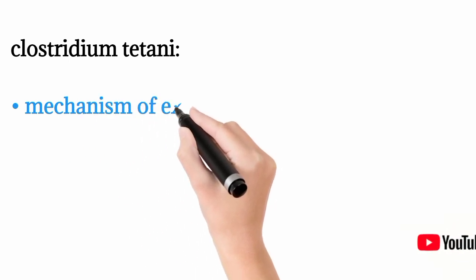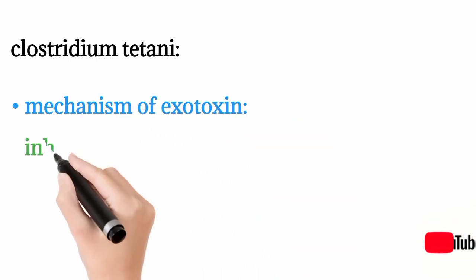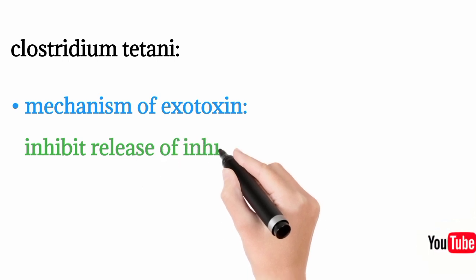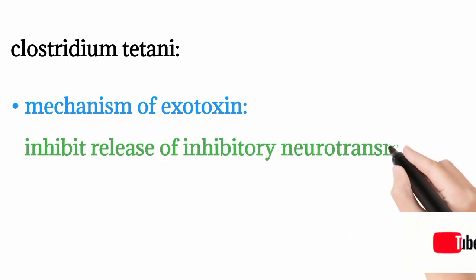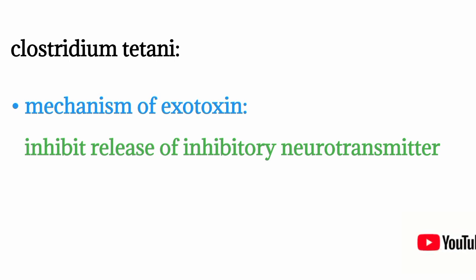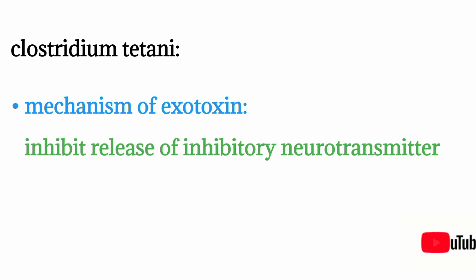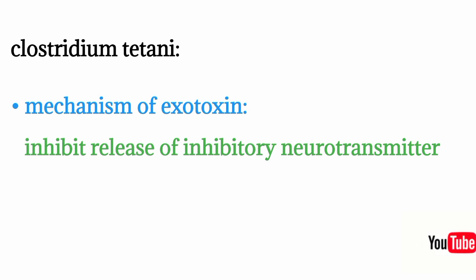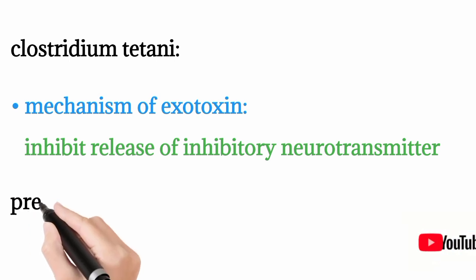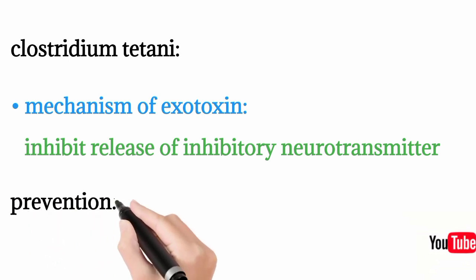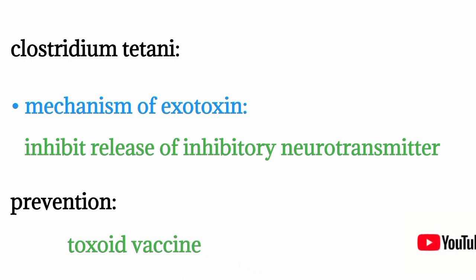The mechanism of action of the Clostridium tetani exotoxin is to inhibit the release of inhibitory neurotransmitters. By inhibiting inhibitory neurotransmitters, excitatory action occurs, causing muscles to go into spasm — producing spastic paralysis.